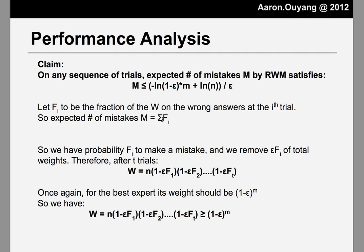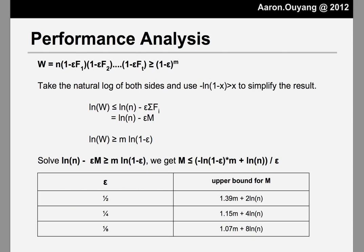The mistakes are always related to the penalty. In each trial, we remove epsilon times fi of the total weight. Initially the weight is n, so after a series of trials, the current total weight W is given by the corresponding equation. Looking at the best expert again, its weight is exactly (1 - epsilon)^m. And since its weight is only part of the total weight, we again obtain a lower bound on W. Taking the natural log of both sides and using the fact that minus log(1 - x) is greater than x, we simplify the result.